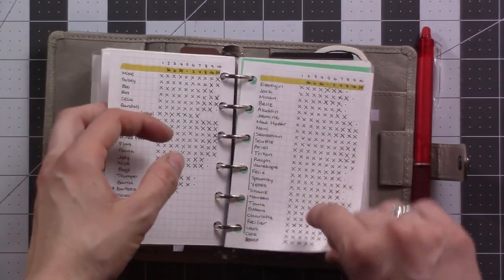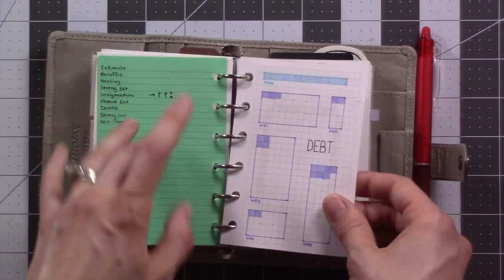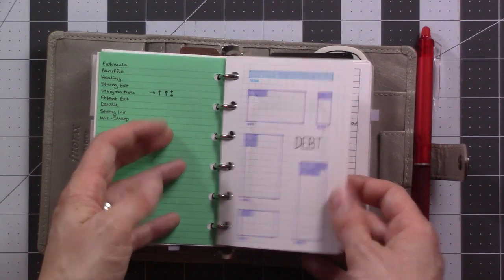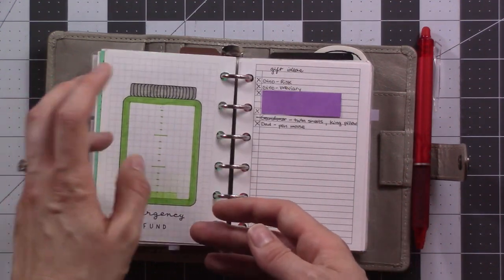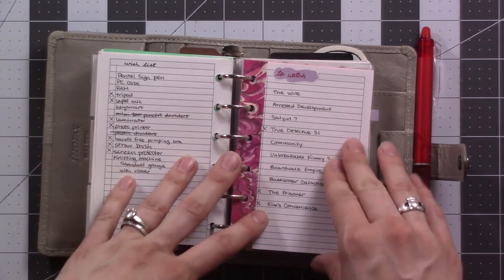These are game notes here, here, and here. And then I haven't updated my debt and savings trackers in a while, but it's there. Gift ideas and wishlist are also still there.